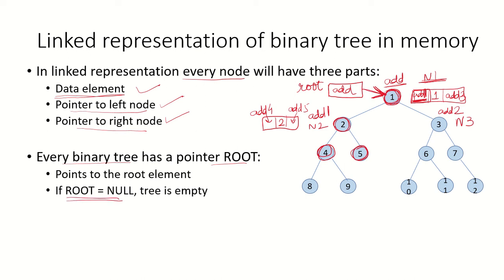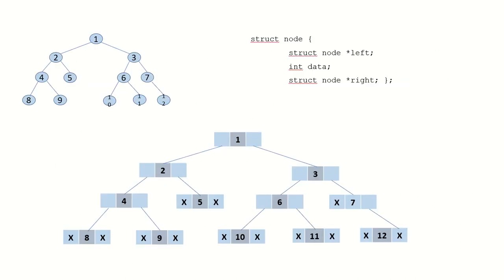If root is null, that means the tree is empty — a null value indicates that the tree is empty. This will be the definition of the node. If we define each node as a structure, it will have a pointer to the left child, which is of struct node type, because each node on the left or right side is itself going to be of struct node type.